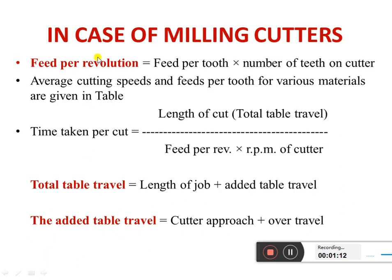For a milling cutter, Feed per Revolution = Feed per Tooth × Number of Teeth on Cutter. The average cutting speed and feed per tooth for various materials are given in the reference table, which we will see in the next slide.